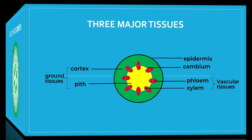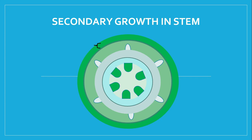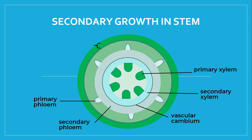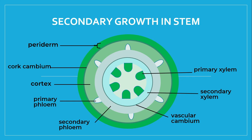Between the xylem and phloem is the cambium, an actively dividing cell layer responsible for secondary growth of stems and roots. In dicot stems, a vascular cambium is present between the xylem and phloem. By repeated cell division, this lateral meristem produces secondary phloem and xylem. This lateral meristem is present on the lateral side of the stem and root, and it helps increase the thickness of a plant. Good examples of lateral meristematic tissue are the vascular cambium and cork cambium.